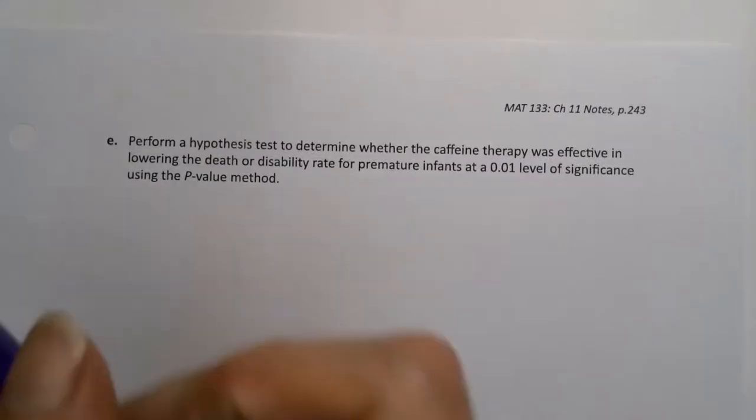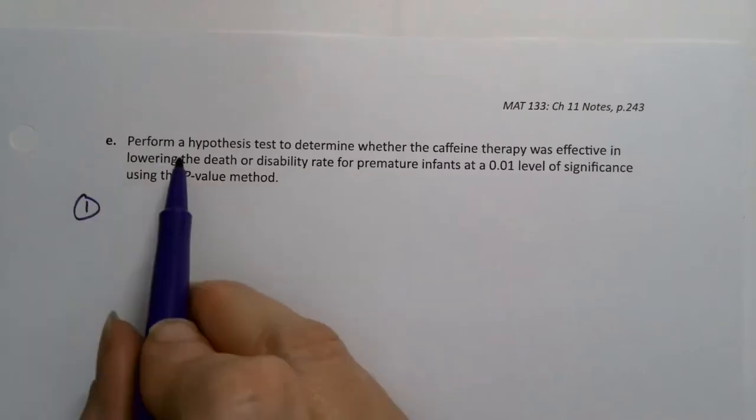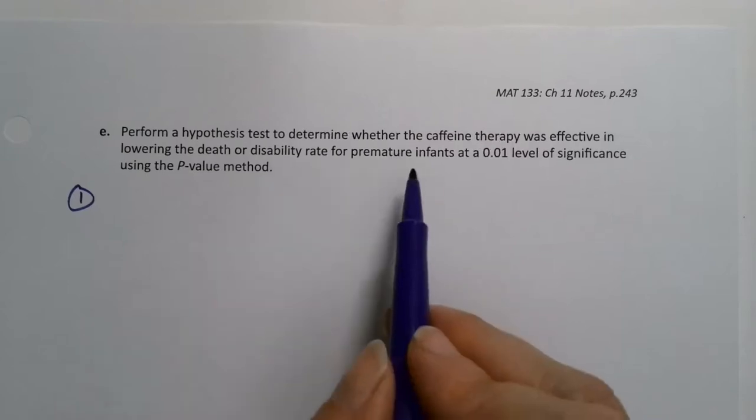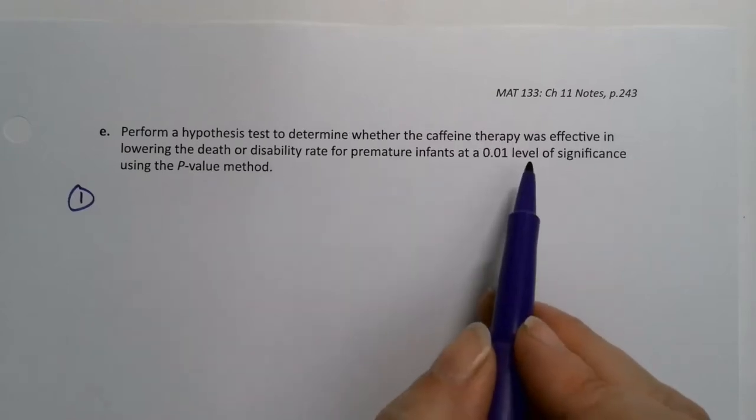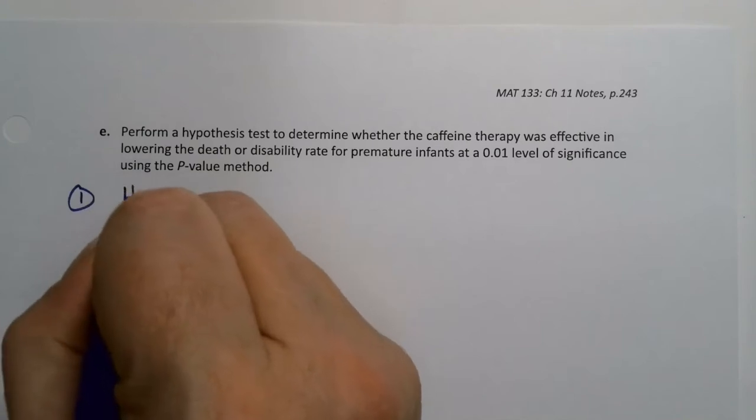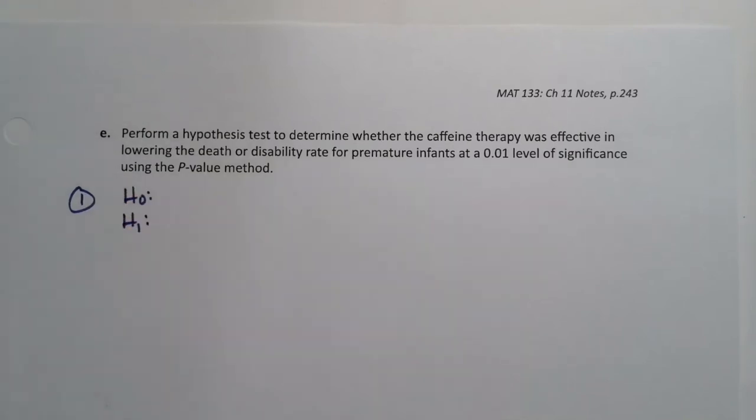So step one. We need to figure out whether the caffeine therapy was effective in lowering the death or disability rate for the premature infants at alpha equals 0.01 level significance using the p-value. The hardest part about these problems is actually figuring out what your null and alternative hypotheses are.